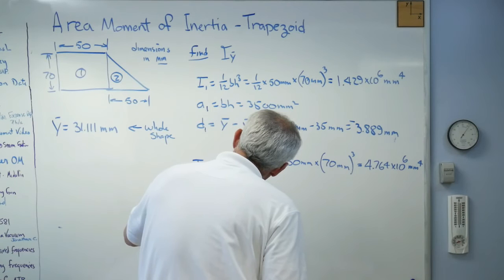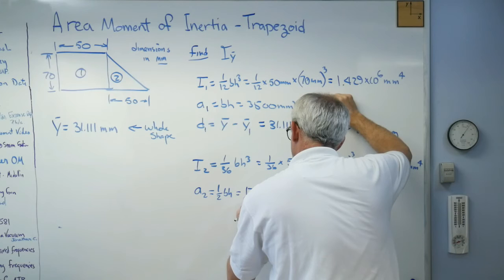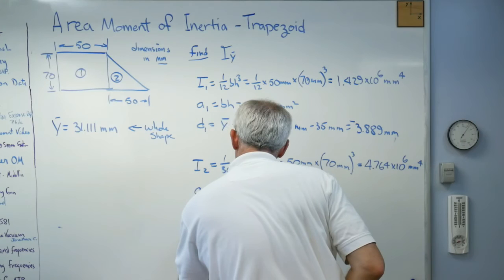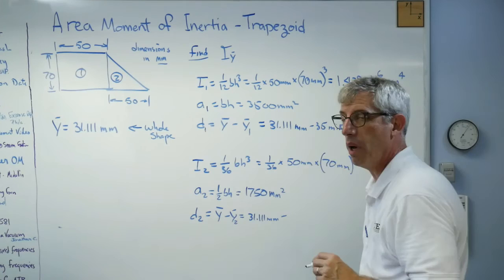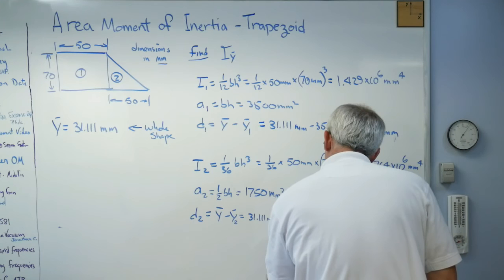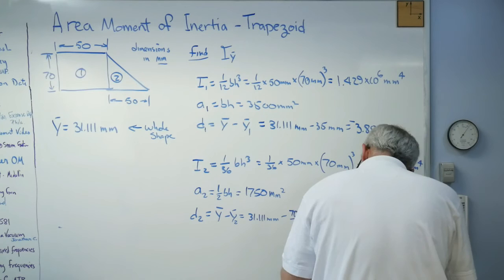A_2 is really easy. It's one half bh, one half bh, sorry. And it's just half of that, right? So, it's 1750. Okay, last thing you need to know here. d_2 equals y bar minus y_2 bar. Okay, well, we know that one is 31.11. The centroid of a triangle is one-third of its height. And so that's going to be 70 millimeters over three. That turns out to be 7.778 millimeters. Okay, we have all the pieces now, all the pieces together.